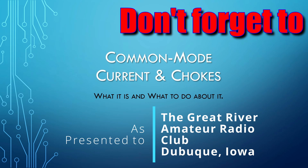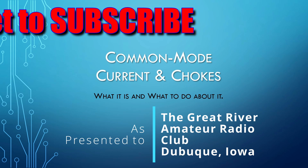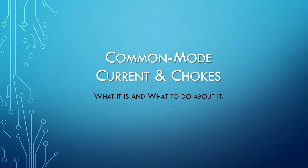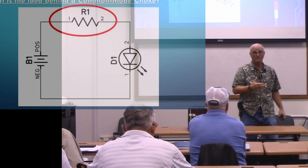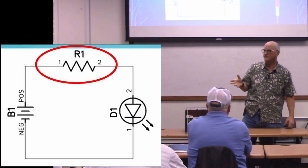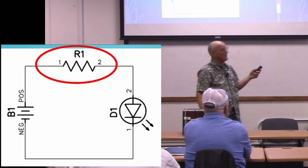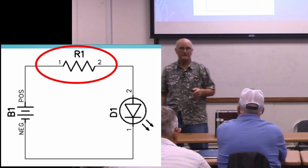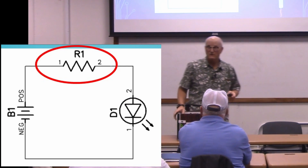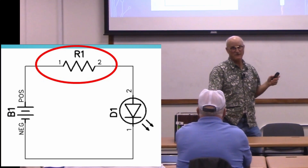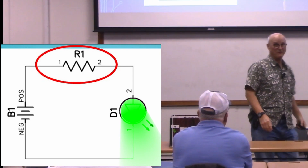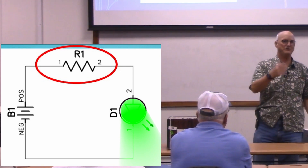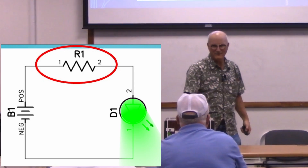The topic is common mode current and chokes - what is common mode current and what can you do about it? We've all played with LEDs. You get a battery and you have an LED, and if you connect the battery directly to the LED you fry it. So what do you do to fix that? You put a current limiting resistor in series with the LED, carefully choosing the value so that the right amount of current goes through.